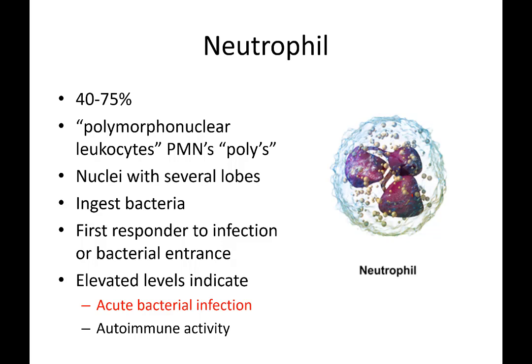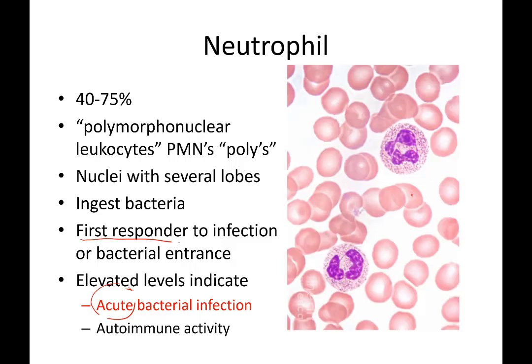For the purposes of this class, we're finding general categorizations initially. The neutrophil is associated with an acute — meaning short-term, recent onset — bacterial infection. Because neutrophils are considered the first responder and are the most numerous in the blood, their levels will be elevated right away if there is a recent or acute bacterial infection. In the histology image we can see the granules and the crazy, inconsistent lobular nucleus.